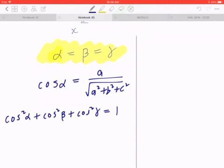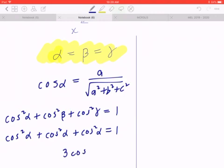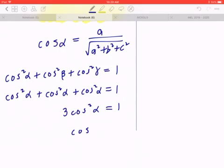And use the fact that alpha, beta, gamma are the same, which means this becomes cosine squared alpha plus cosine squared alpha plus cosine squared alpha equals one. This means you have three times cosine squared alpha, which equals one, or cosine squared alpha equals one over three.